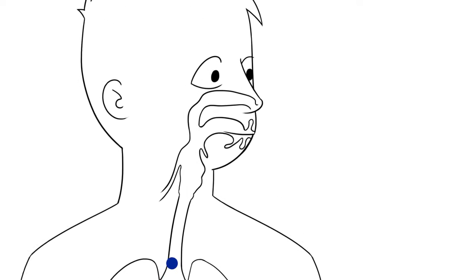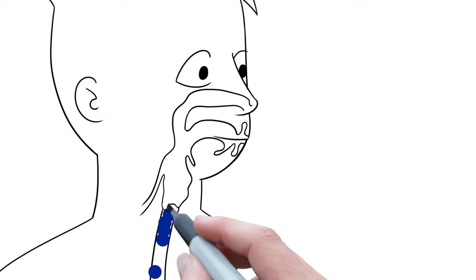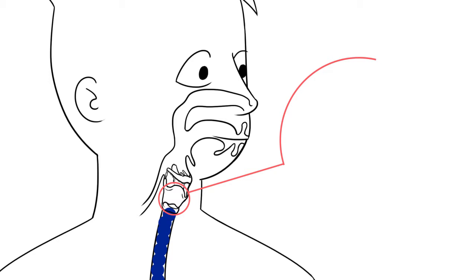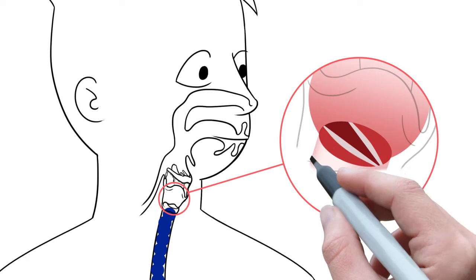The larynx is located in the neck and is made up of muscles, tendons, and cartilage. The larynx houses the vocal cords or vocal folds, which vary in size for each individual.